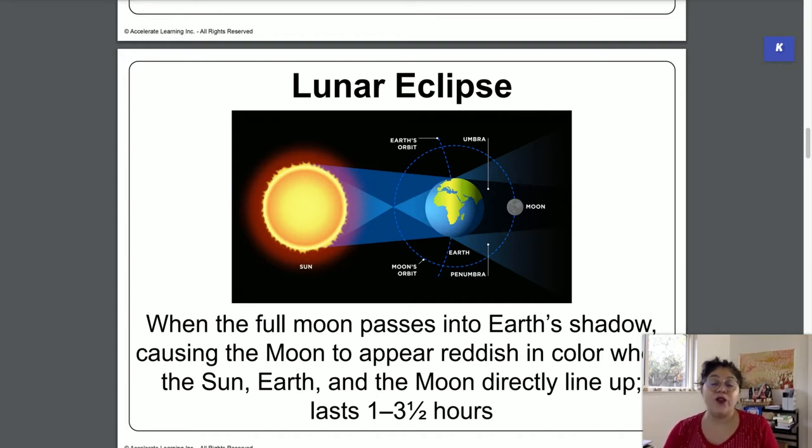But right now, so you know, when the moon is in the shadow of the Earth, sometimes it looks red. And you want to remember this order: Sun, Earth, Moon.